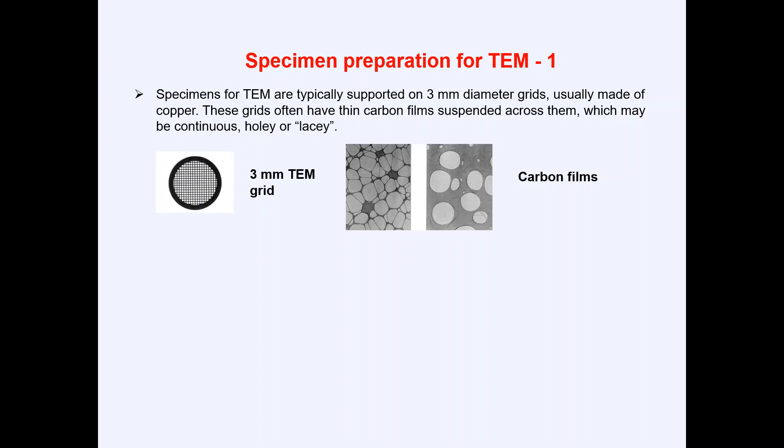There are four basic techniques by which we can prepare the sample for transmission electron microscopy. Depending upon the nature of the sample, we have different techniques in order to characterize it with the help of a transmission electron microscope.